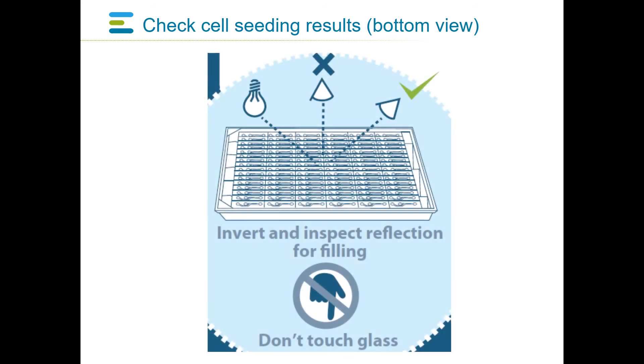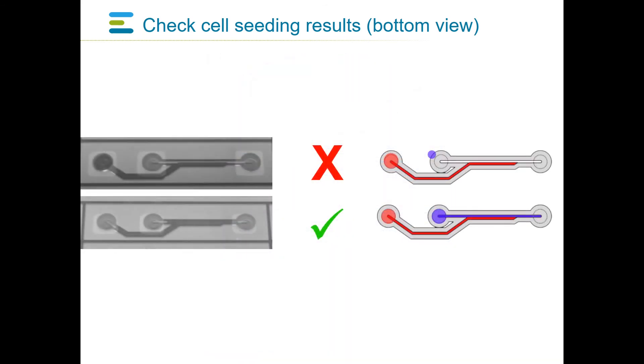After the cell suspension has been dispensed, check that no air has been trapped in the perfusion channel, similar to checking proper filling of the gel channel. Ensure that all channels are filled and show up dark, as trapped air could interfere with medium perfusion.